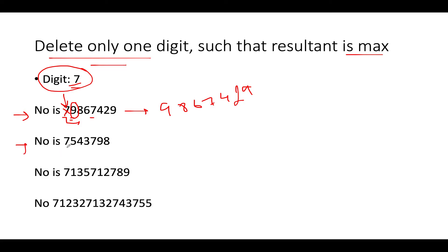Here the number is 7543798. Again, there are two options: either delete the first 7 or the second 7. Let's iterate over it. The first character we see is 7, and the immediate next character is 5, which is lower in value than the digit to be deleted. As a result, we are going to skip this and look for more 7s in the input string.